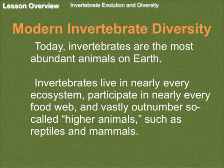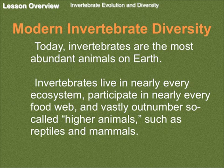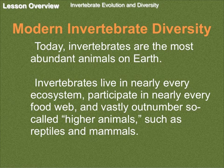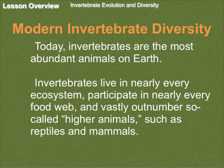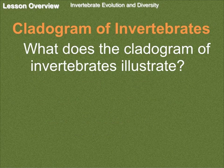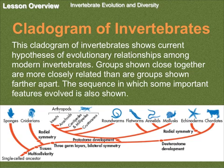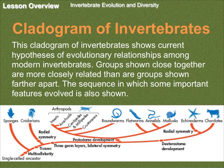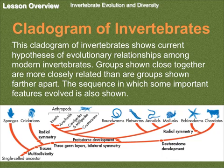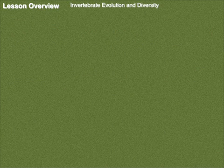Modern invertebrate diversity: today, invertebrates are the most abundant animals on Earth, so we're outnumbered by invertebrates. Invertebrates live in nearly every ecosystem, participate in nearly every food web, and vastly outnumber so-called higher animals such as reptiles and mammals. The cladogram of invertebrates, which you see here, shows the current hypothesis of evolutionary relationships — and remember, these are hypotheses, just ideas. Groups shown close together are more closely related than groups shown farther apart. The sequence in which some important features evolved is also shown.